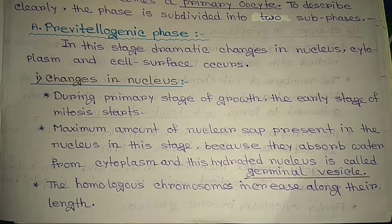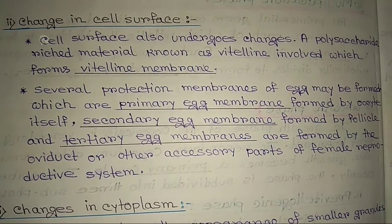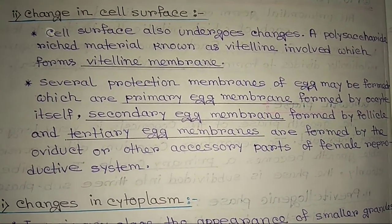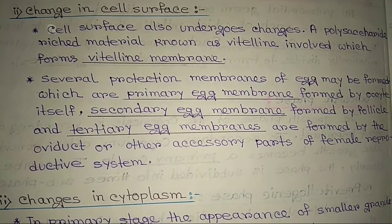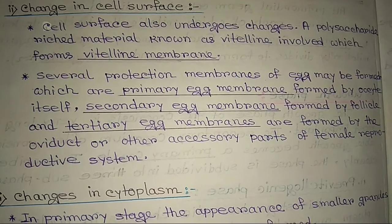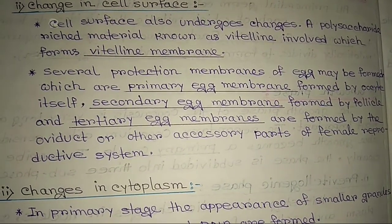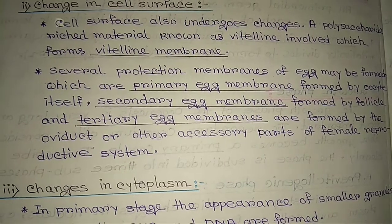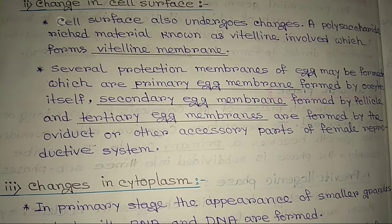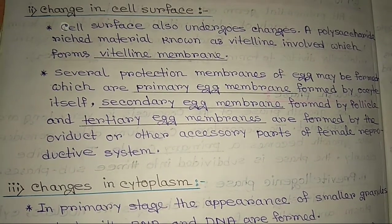The homologous chromosomes increase along their length. Regarding changes in cell surface: the cell surface also undergoes changes. A polysaccharide-rich material known as vitelline is involved, which forms the vitelline membrane. Several protective membranes of the egg may be formed: the primary egg membrane formed by the oocyte itself, secondary egg membrane formed by follicle, and tertiary egg membrane formed by the oviduct or other accessory parts of the female reproductive system.